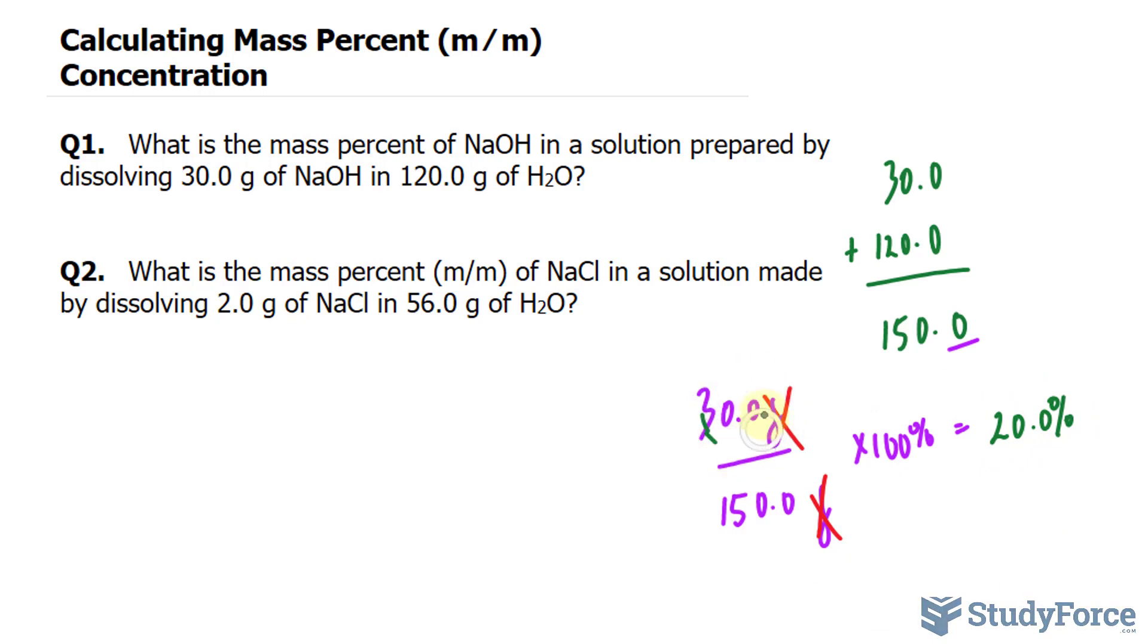Three significant figures because this one has three, this one has four, and we take the lesser of the two. The same thing can be applied for question two.